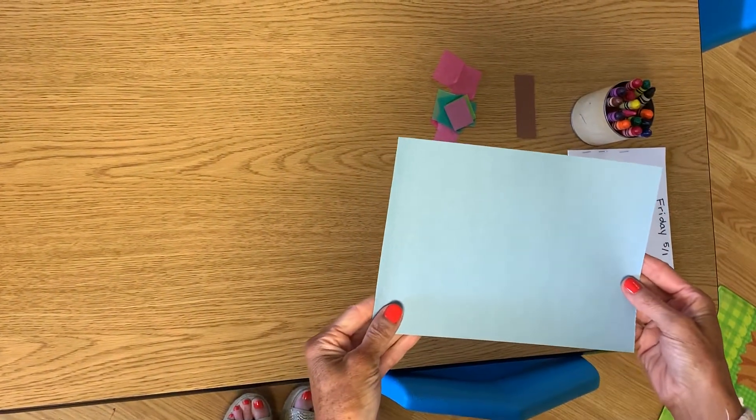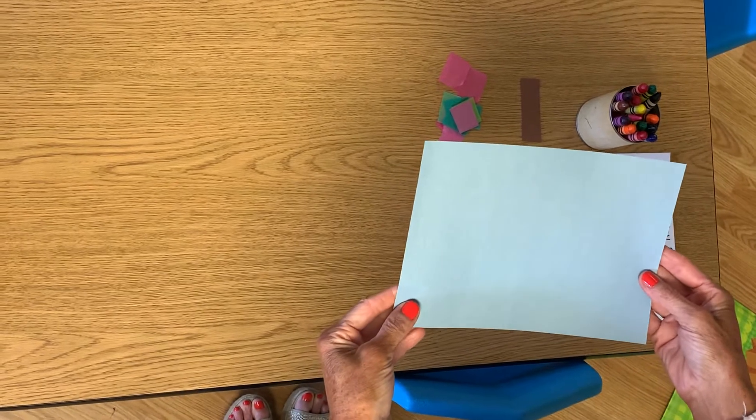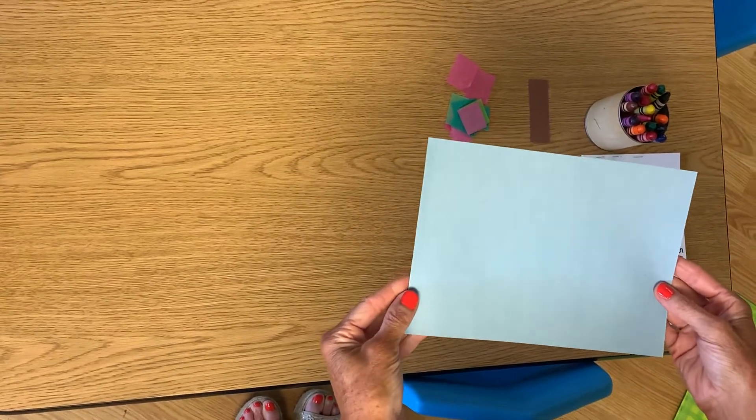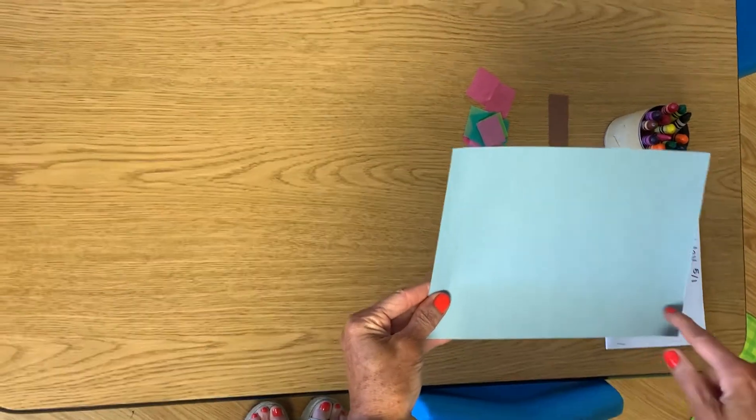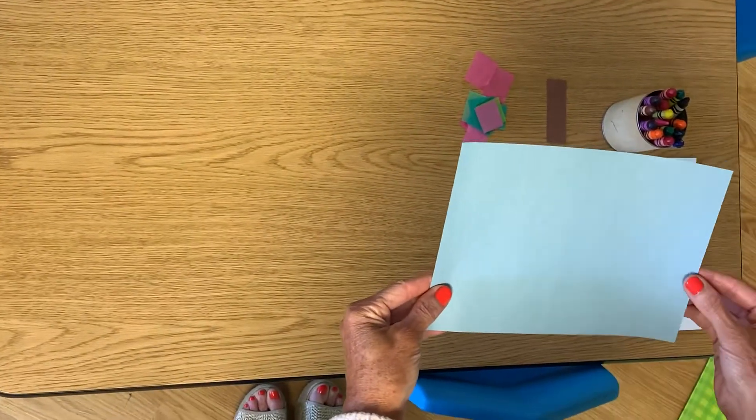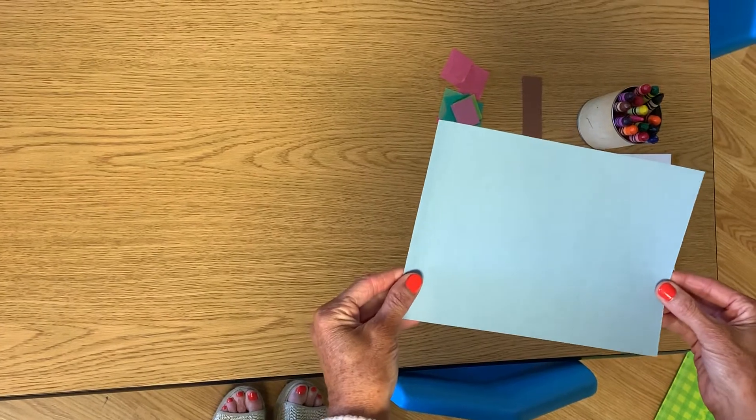We are going to start by looking at this piece of paper. What color is this paper? It is blue. And anybody know the shape? It has those two long sides and two short sides, which makes a rectangle.